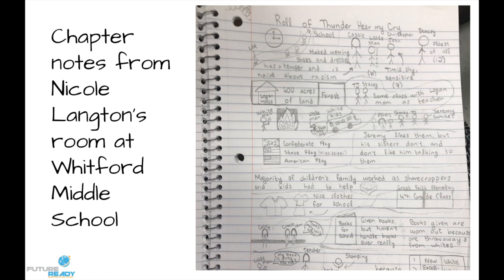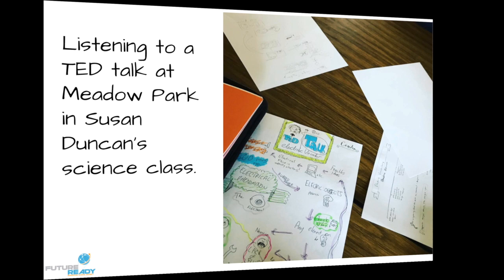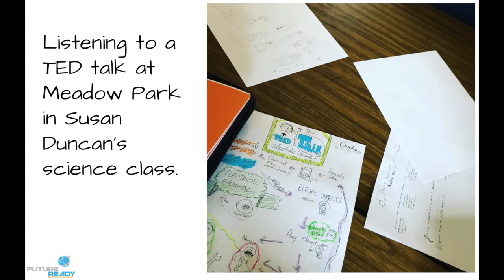Here's an example from Nicole Langton's room at Whitford Middle School. This is an example of sketch notes after reading a chapter of Roll of Thunder, Hear My Cry. You can see it at a secondary level. This is another example from me teaching this session in a science classroom over at Meadow Park. You can definitely see a lot of different styles here. One shows a student using a lot more images and color. You can see in the bottom right corner a student that was very linear and did a timeline instead. The way people's brains definitely change the end product for each kid, which I think is important, allowing kids to make that decision of what works best for them.